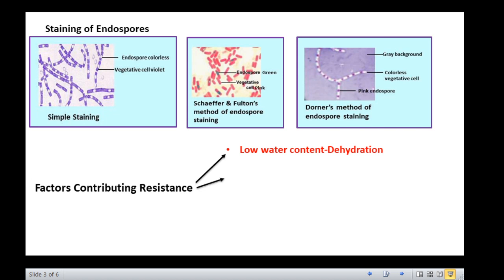The second factor is the chemical dipycolinic acid, which has been found in the spore cell of all endospores. Dipycolinic acid interacts with calcium ions to form calcium dipycolinate, which is the main substance believed to lend endospores their resistance and represents about 10% of the dry weight of an endospore.